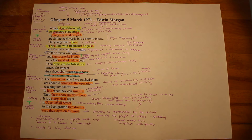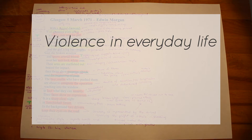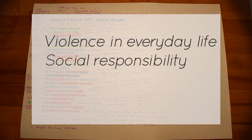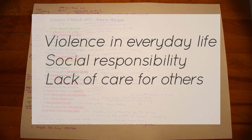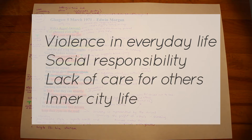In his poem 'Glasgow 5th March 1971,' Edwin Morgan explores the themes of violence in everyday life, social responsibility, lack of care for others, and inner city life.